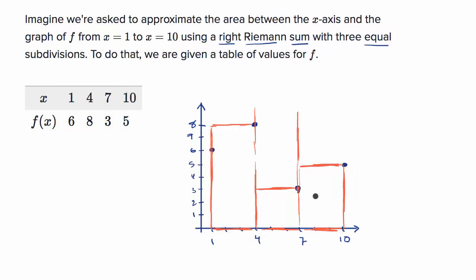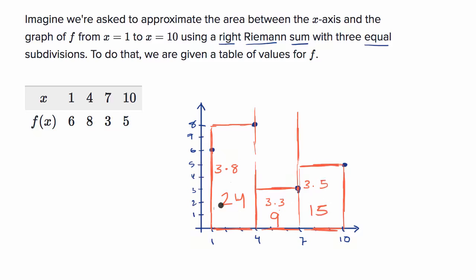Our right Riemann sum approximation adds the areas of these rectangles. The first rectangle is three wide and eight tall: 3 times 8 equals 24. The second is three wide and three tall: 3 times 3 equals 9. The third is three wide and five tall: 3 times 5 equals 15. Summing these up: 24 plus 9 plus 15 equals 48.